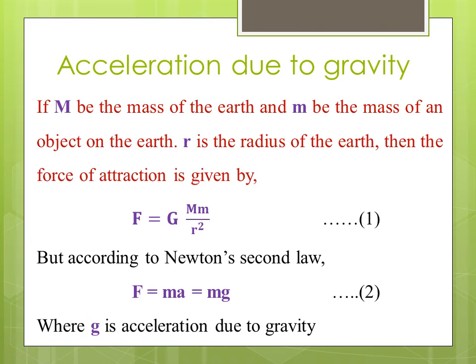Acceleration due to gravity: If capital M be the mass of the earth and small m be the mass of an object on the earth, small r is the radius of the earth, then the force of attraction is given by F equals G into capital M into small m by r squared. Let it be equation number one. But according to Newton's second law, F equals m into A equals m into g, let it be equation number two, where g is acceleration due to gravity.